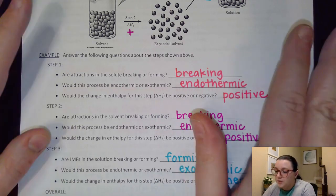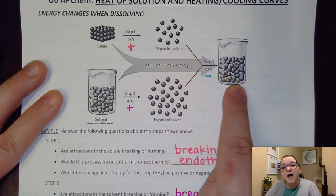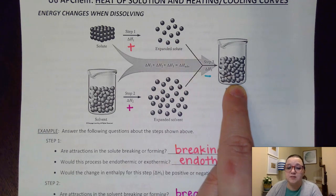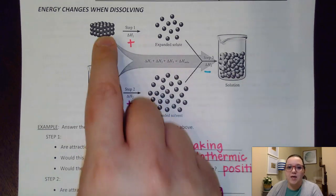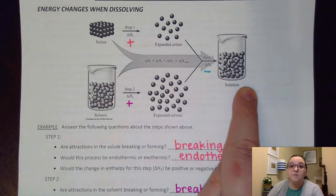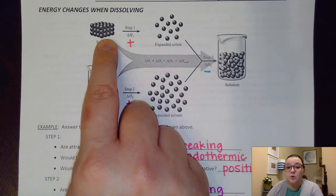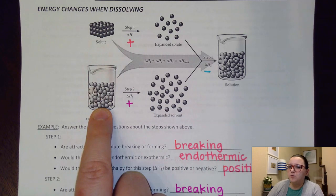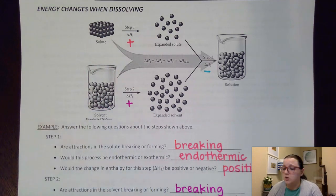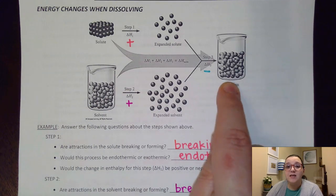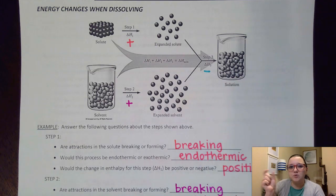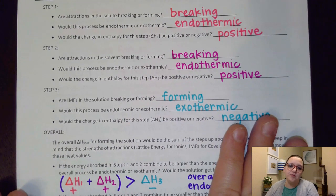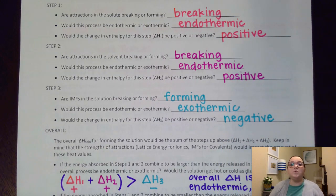Now I'm going to put those together in step three. When the solute and solvent interact, I'm going to end up forming new combination types of forces. For example, if I put an ionic solute with water, I'm going to form those ion-dipole forces between them. Or if I tried to put some sort of nonpolar with water — obviously we know those don't mix — but the new ones that would form would be the dipole-induced dipole forces. In any case, in step three the IMFs would be forming, so therefore the process would be exothermic, and my delta H for that step would be negative.